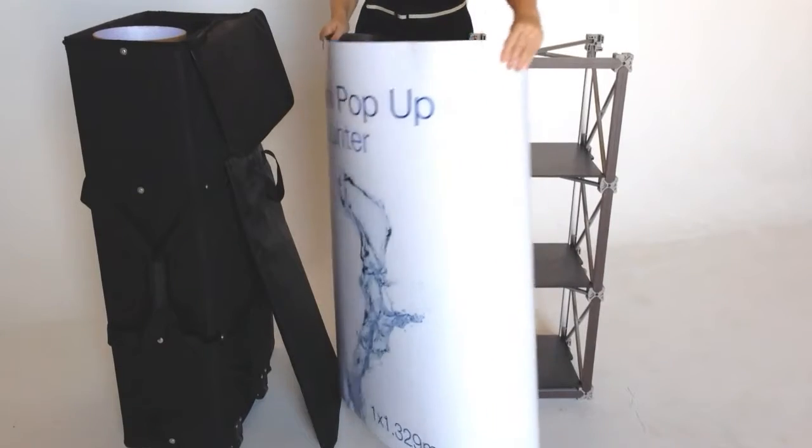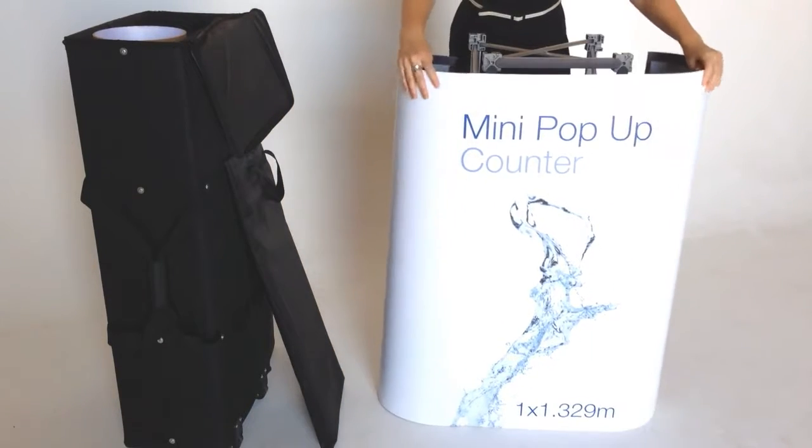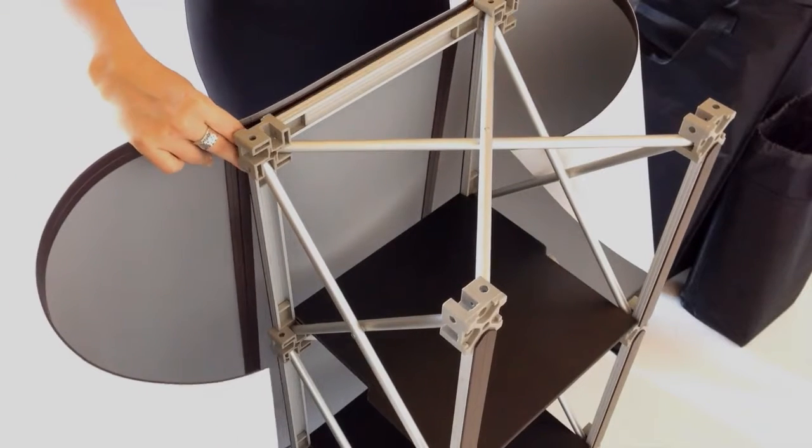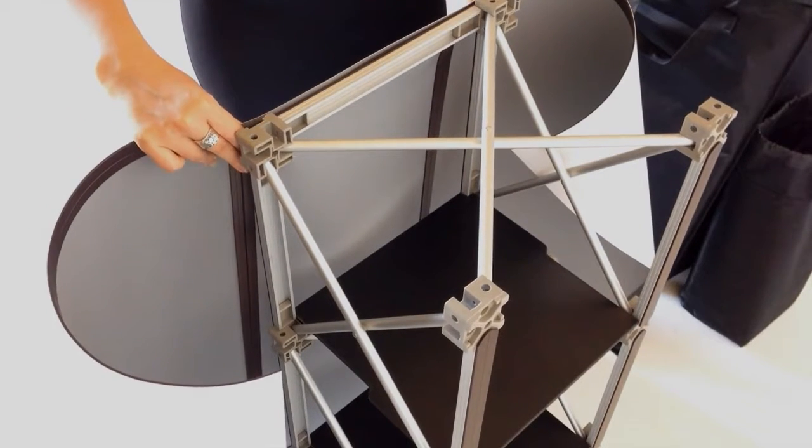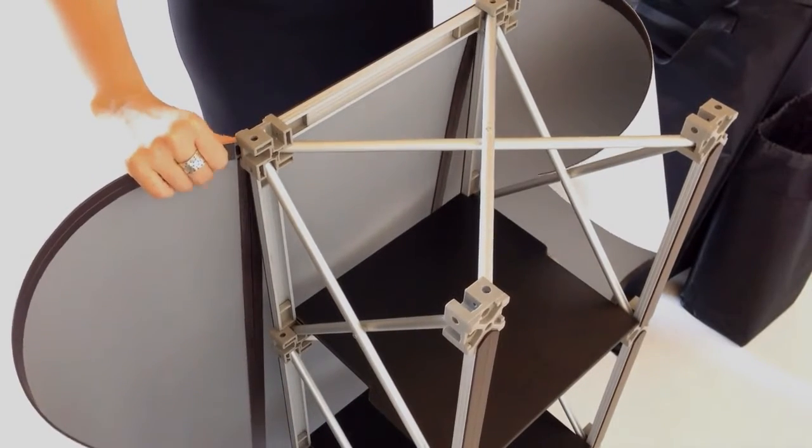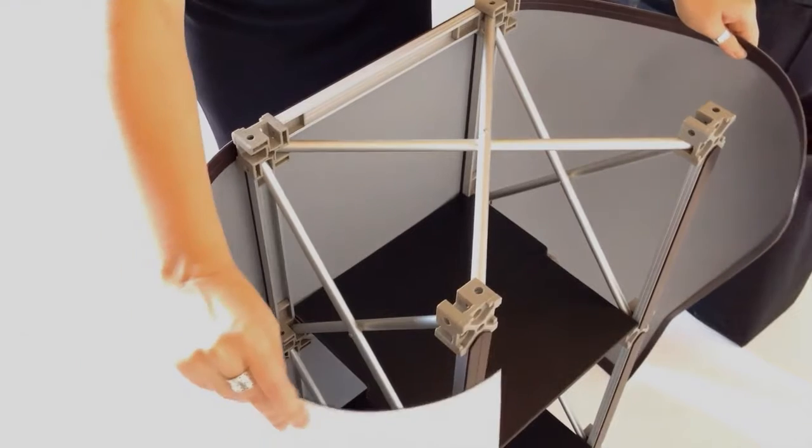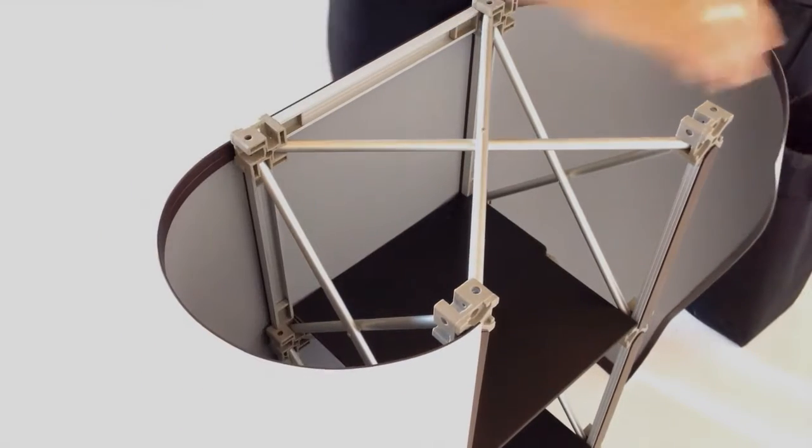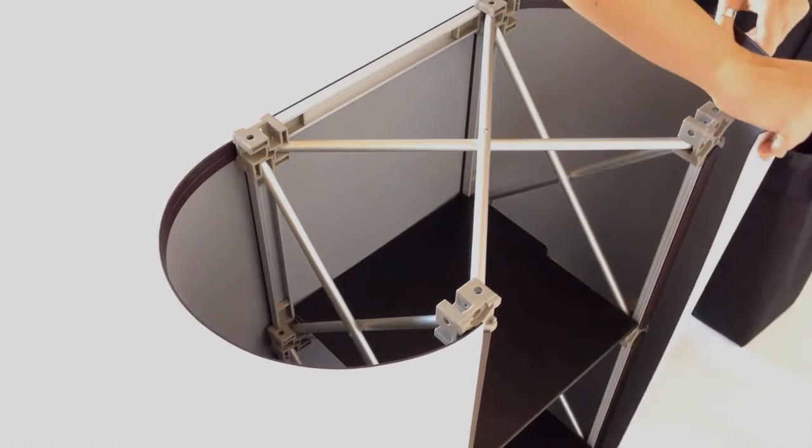Unroll the graphic and align magnetic tape to rails on front of counter prior to affixing. Secure outer edges of graphic to central line of rear magnetic rails.